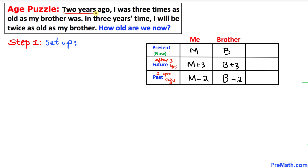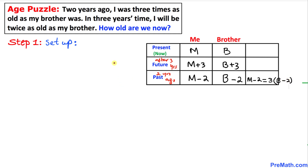Let's focus on our very first sentence: two years ago — that means we are dealing with the past tense, so we go to the last row. I was three times as old as my brother was, meaning I in this case is m minus two. So: m minus two equals three times the brother's age, which is b minus two.